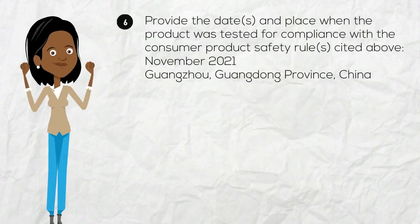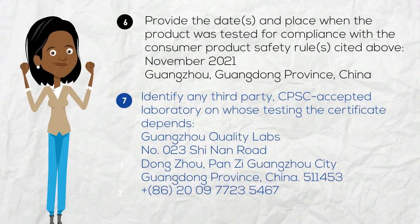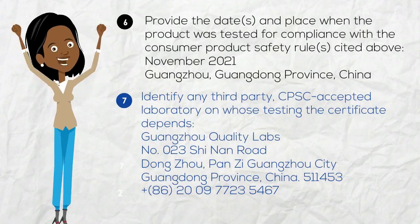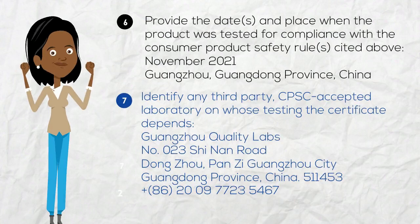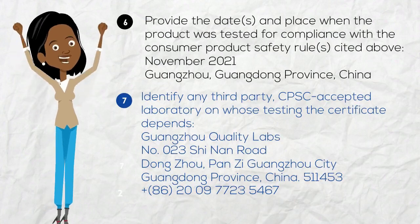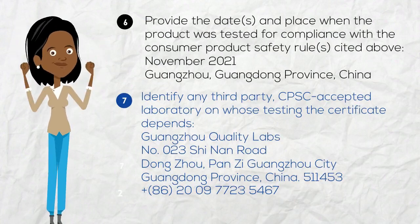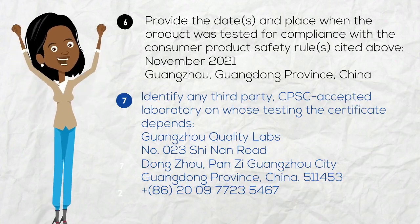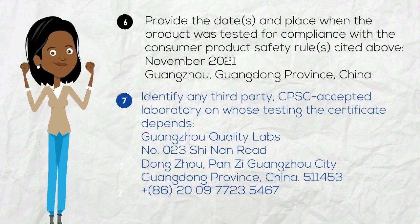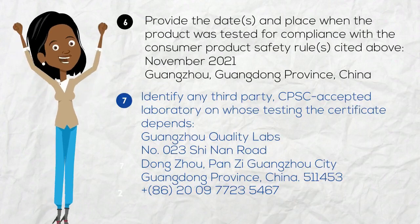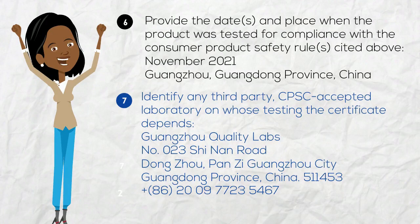And finally, for the last element, I include the name, address, and phone number of the laboratory where the cribs were tested. And now I'm finished creating the CPC and can start selling my cribs to US consumers.